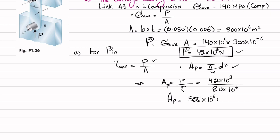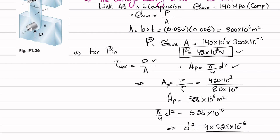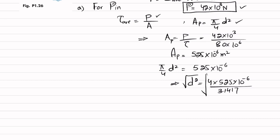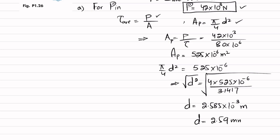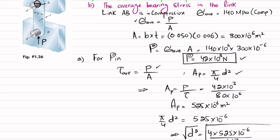Now, area of pin equals pi over 4 times d squared, which equals 525 times 10 to the power minus 6. From here, d squared equals 4 times 525 times 10 to the power minus 6 divided by pi, which is 3.1417. Taking the square root of both sides, d equals 2.585 times 10 to the power minus 3 meter, or in millimeter it equals 2.59 millimeter. This is the answer to our first part.